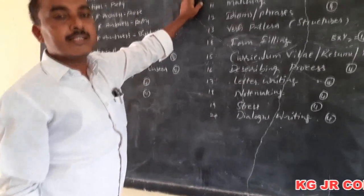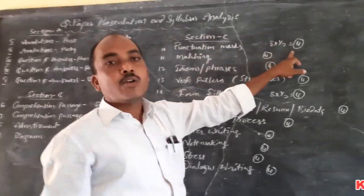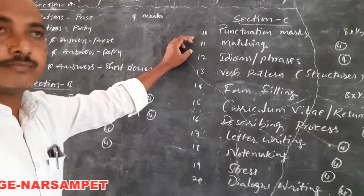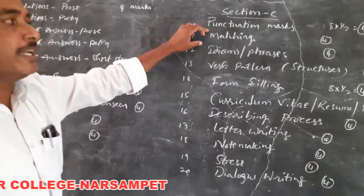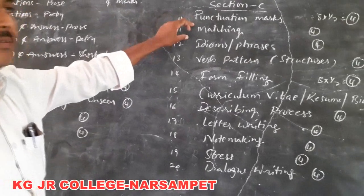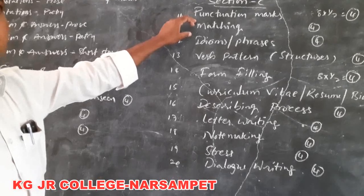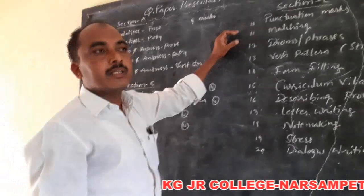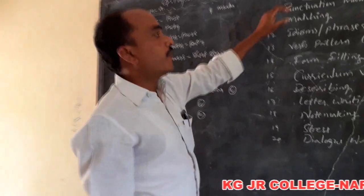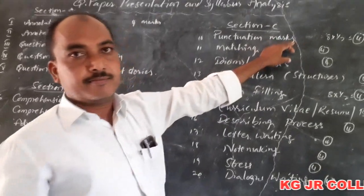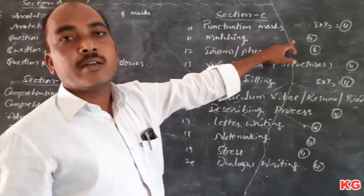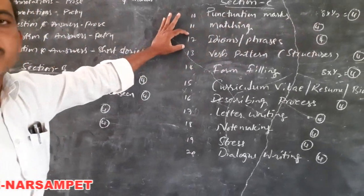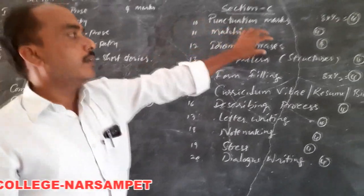The next bit — the eleventh bit — is matching. This matching will be completely based on the text, from the glossary in your textbook. On page number 40, there are 150 words available, and this bit will be asked only from those words. If you prepare those, you can get 4 out of 4 marks in this bit.